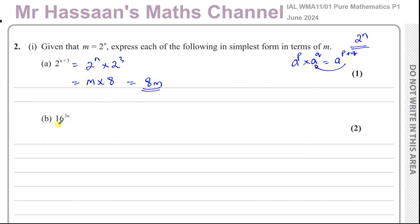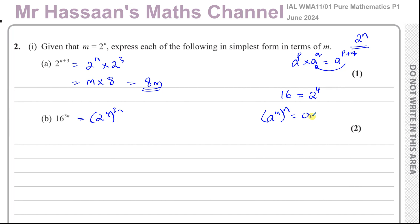Similarly for the next part, we have to think: can we express 16 as 2 to the power of something? Yes — 16 is 2 to the power of 4. So we can rewrite 16 to the power of 3n as 2 to the power of 4 to the power of 3n. The rule is that a to the power of m to the power of n equals a to the power of m times n, so multiplying those powers gives us 2 to the power of 12n.